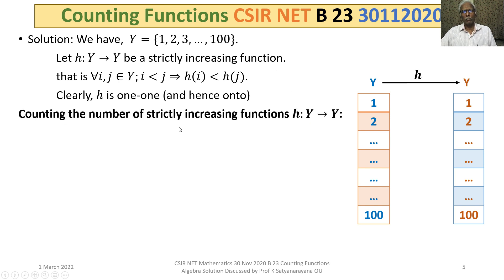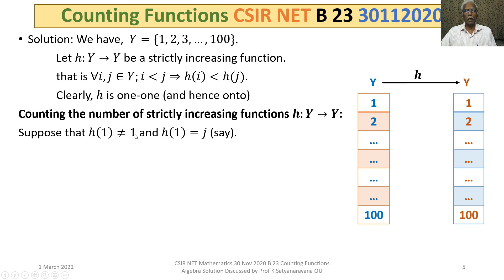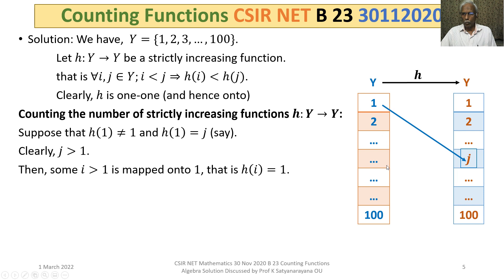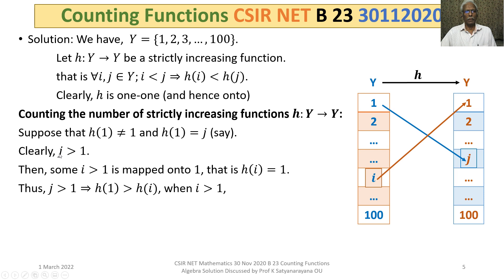Let us now count the number of strictly increasing functions h from a finite set Y to itself. Suppose h(1) is not equal to 1 — that means h is not sending 1 to 1, but sending it to some j where j ≠ 1, so j > 1. Then some i > 1 in the domain will be sent to 1, meaning h(i) = 1. Thus j > 1 implies h(1) > 1.